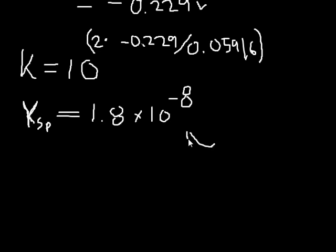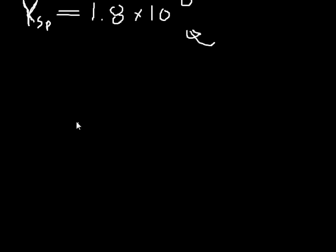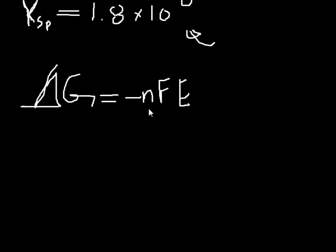Now what if you want to find the Gibbs free energy? You might know that the Gibbs free energy equation is equal to negative nFE, where n is the number of electrons in the reaction, F is the Faraday constant, and E is the potential difference.